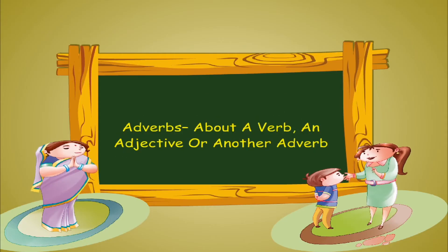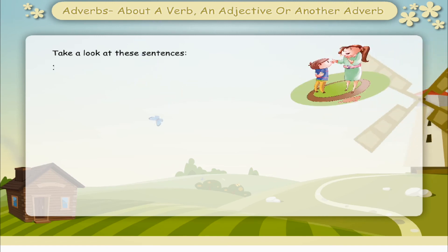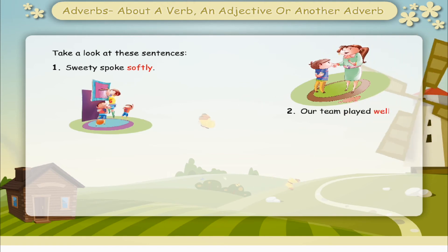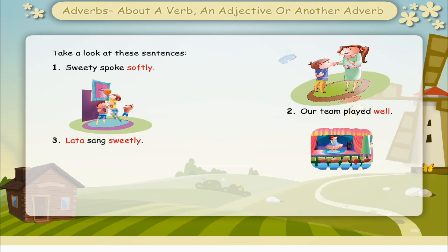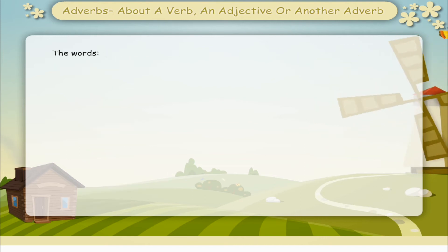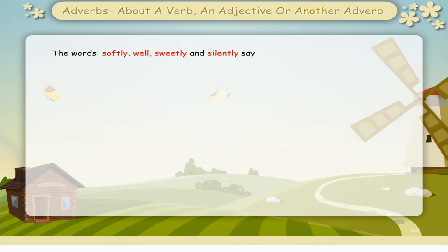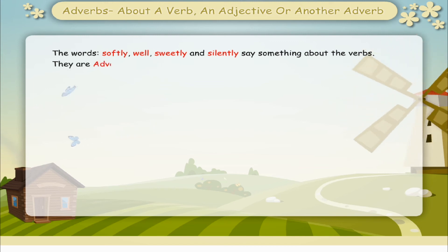Adverbs — about a verb, an adjective, or another adverb. Take a look at these sentences. Sweetie spoke softly. Our team played well. Lata sang sweetly. Sheela prayed silently. The words softly, well, sweetly, and silently say something about the verbs. They are adverbs.